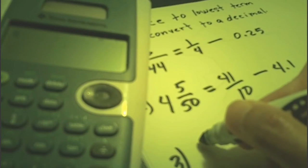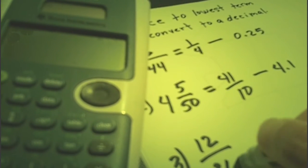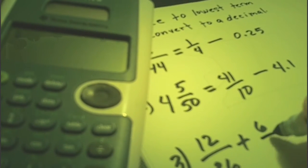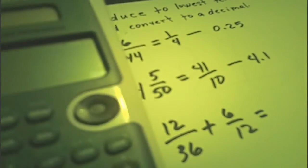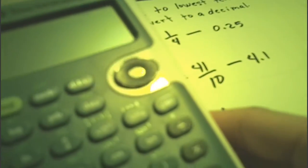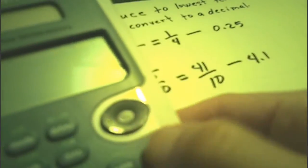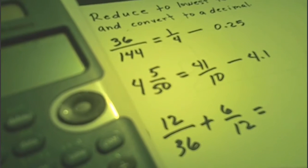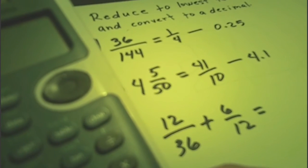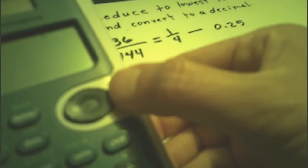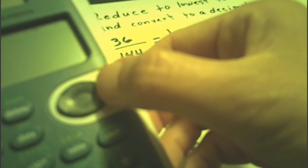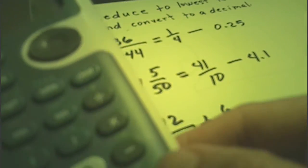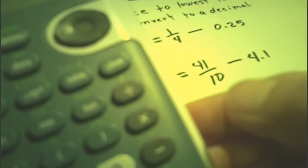Let's add the fractions 12 over 36 plus 6 over 12. Press the N/D button again, enter the numerator 12, press the arrow down button, enter the denominator 36, press the arrow right button, enter the plus sign, then press N/D again.